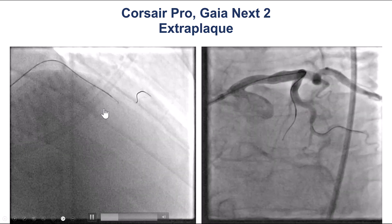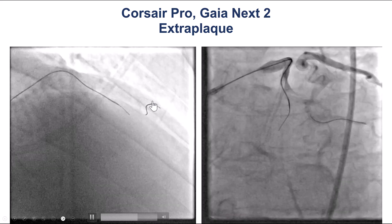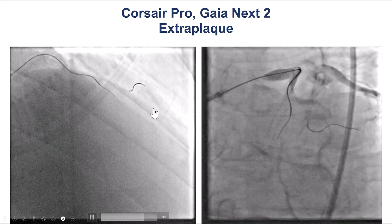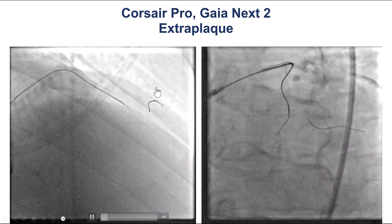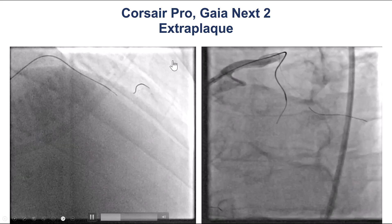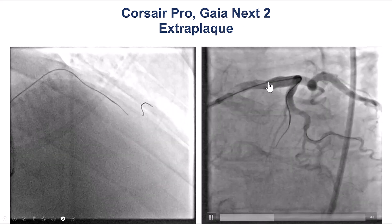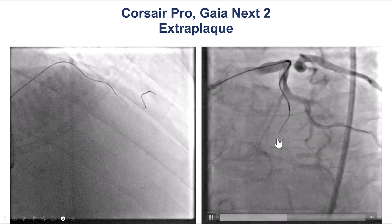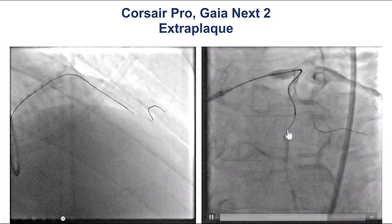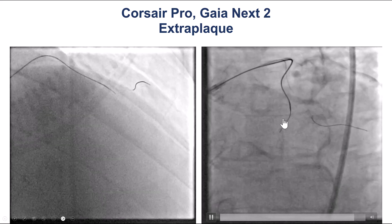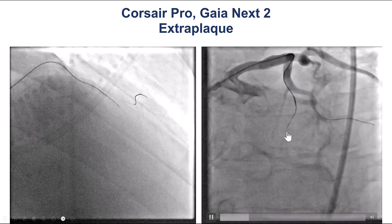We brought a microcatheter and placed a safety wire within the diagonal branch to make sure we don't compromise patency of that branch. We then performed antegrade wiring attempts using a Gaia NX2, but the Gaia NX2 was not located within the lumen — it appeared to be in the extraplaque position.